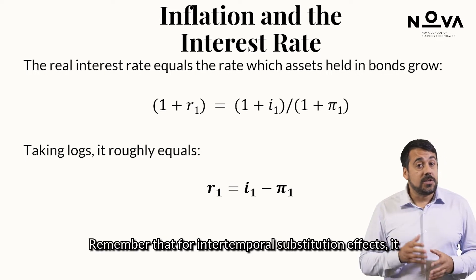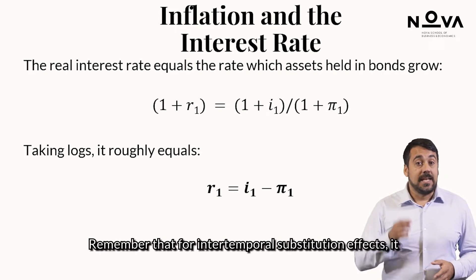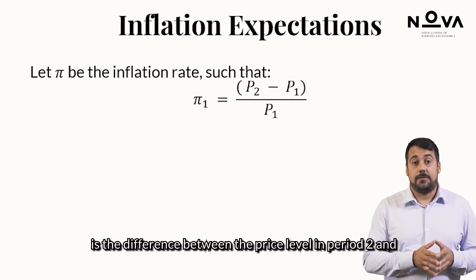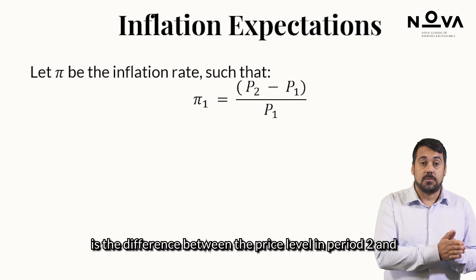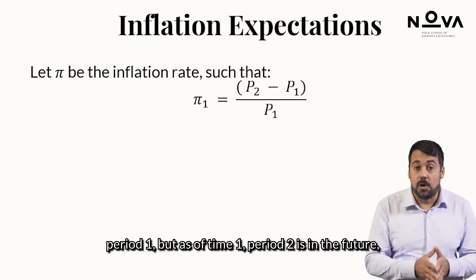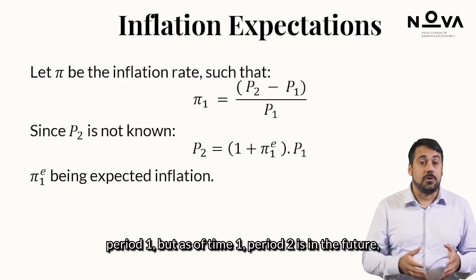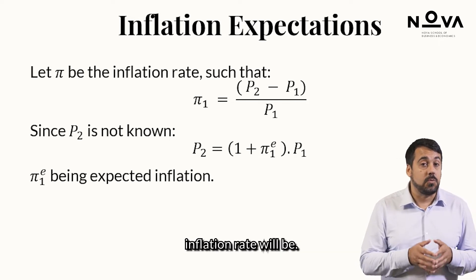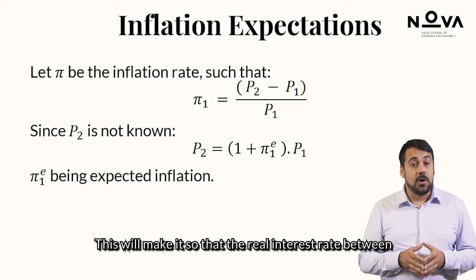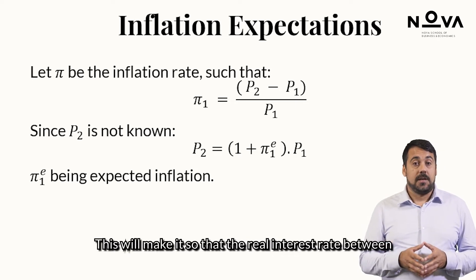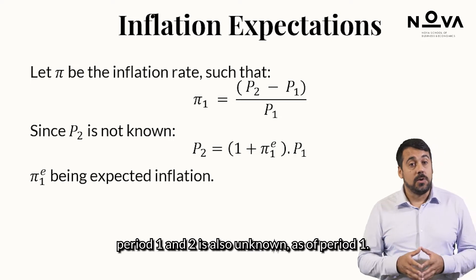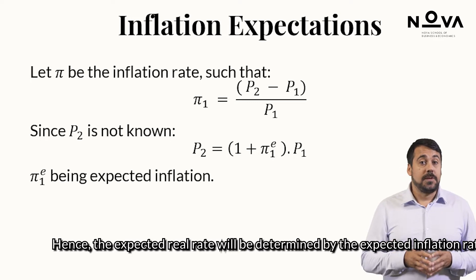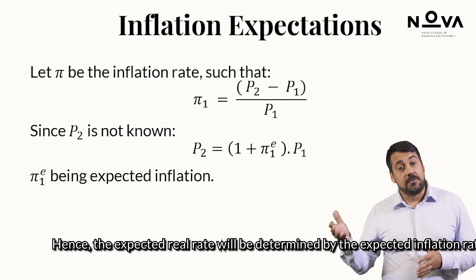Remember that for intertemporal substitution effects it is the real rate that matters. Note also that the inflation rate is the difference between the price level in period 2 and period 1. But as of time 1, period 2 is in the future, and therefore one can only form expectations about what the inflation rate will be. This means that the real interest rate between period 1 and 2 is also unknown as of period 1. Hence, the expected real rate will be determined by the expected inflation rate.